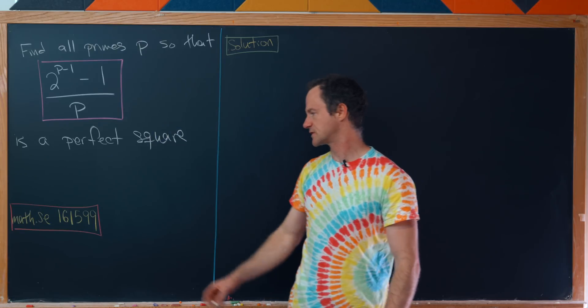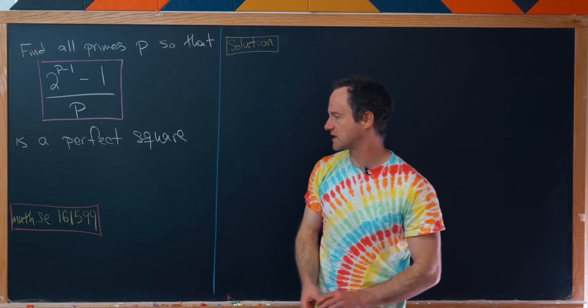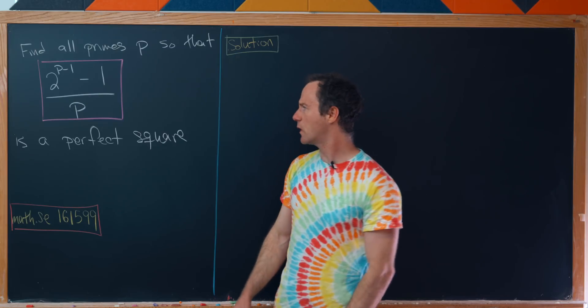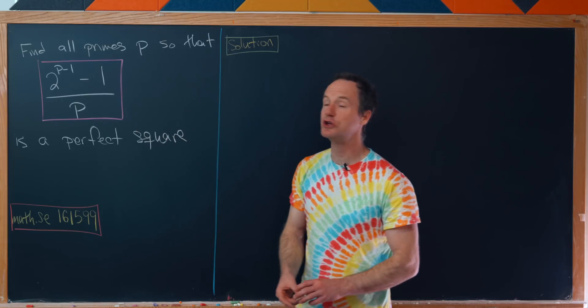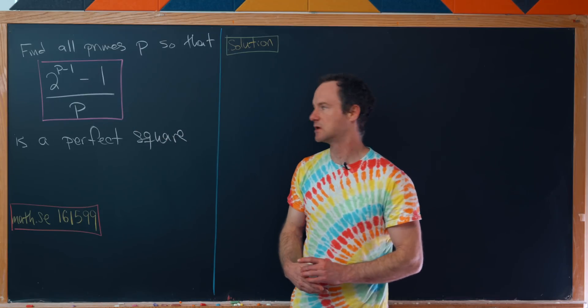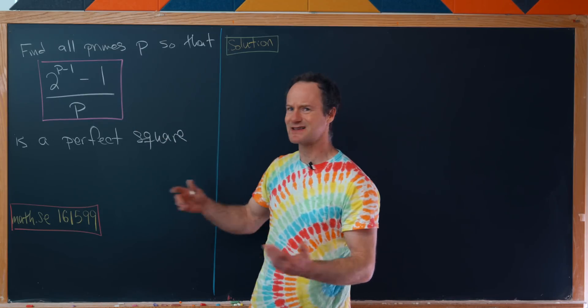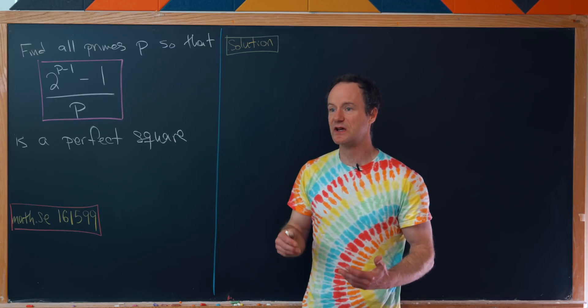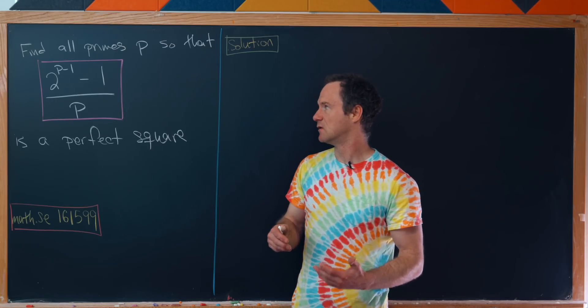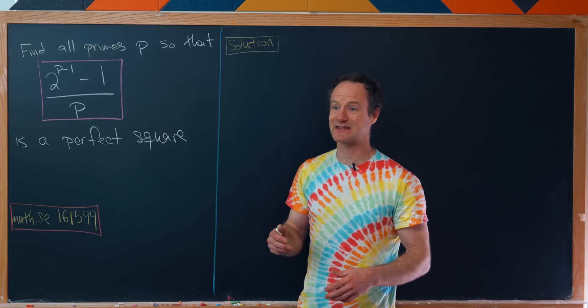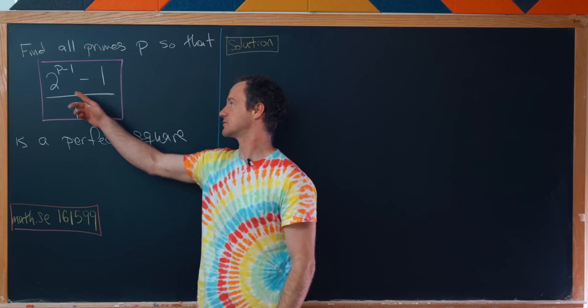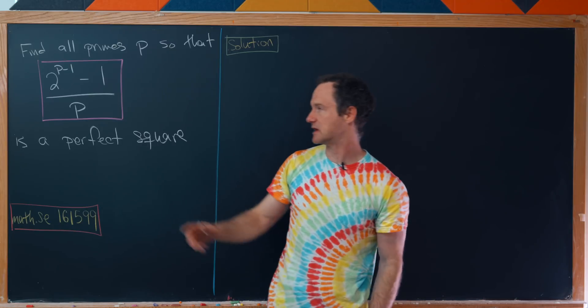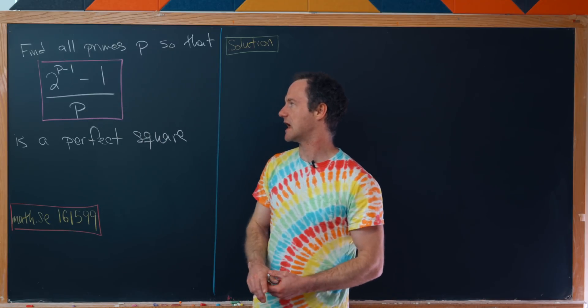Okay, now we're ready for our solution. I found this on the math stack exchange. Let's quickly notice that p equals 2 is not a solution because that doesn't give us an integer in the first place, and we wouldn't expect it to given that Fermat's Little Theorem requires p must not divide the number a, and 2 is playing the role of a here.